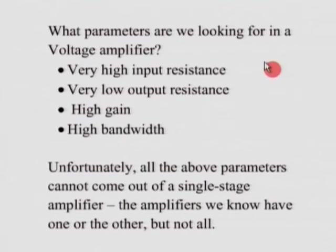We said that the ideal conditions for all these four amplifiers are very different. When we talk about a voltage amplifier, ideally we are looking for very high input resistance. We saw that the equivalent circuit of a voltage amplifier at the input side has a resistance R_i, and only if R_i is much higher than the source resistance can we get the entire voltage across the input of the amplifier. Therefore, in a voltage amplifier, we must have very high input resistance.